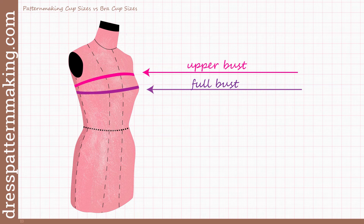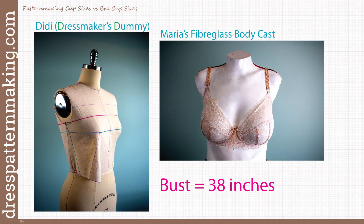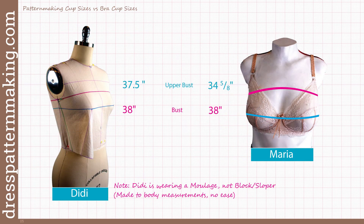On the left is Didi, my dressmaker's dummy, and on the right is a fiberglass cast of my body taken a few years ago. Both Didi and I have the same bust measurement, but very different underbust measurements — which is not relevant to drafting the bodice block — and also very different upper bust measurements. Didi has a half-inch difference between her upper bust and bust; I have three and three-eighths inches difference.